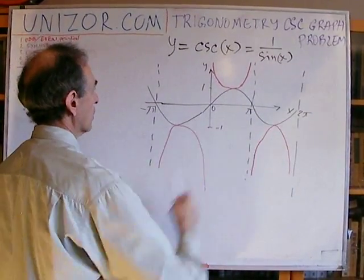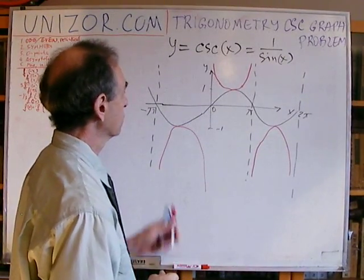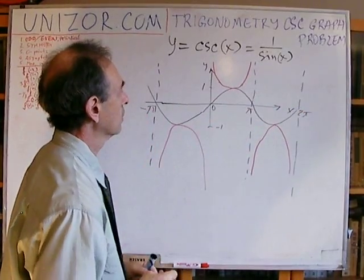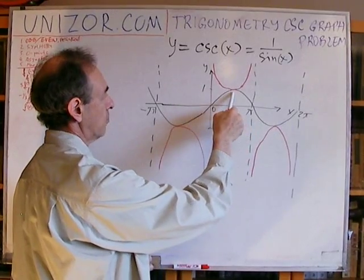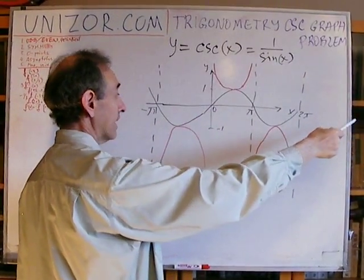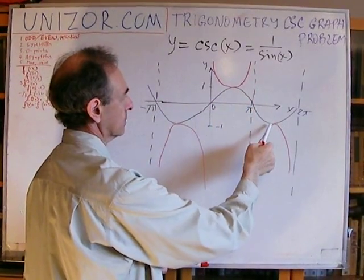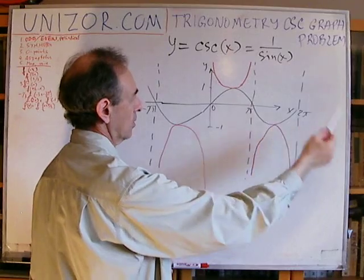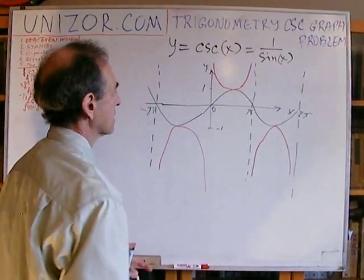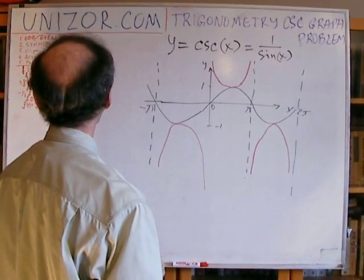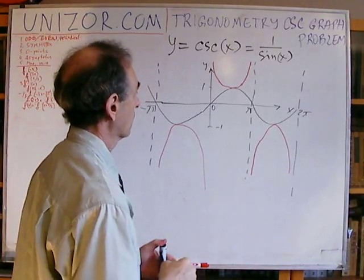The function has asymptotes. It's not equal to zero anywhere — it doesn't have any roots. It has local minimum at pi over 2 plus 2π·n, where n is any integer, equal to 1. And at 3π over 2 plus 2π·n, where n is integer, it has local maximum equal to minus 1. That's it about general properties of this particular graph.